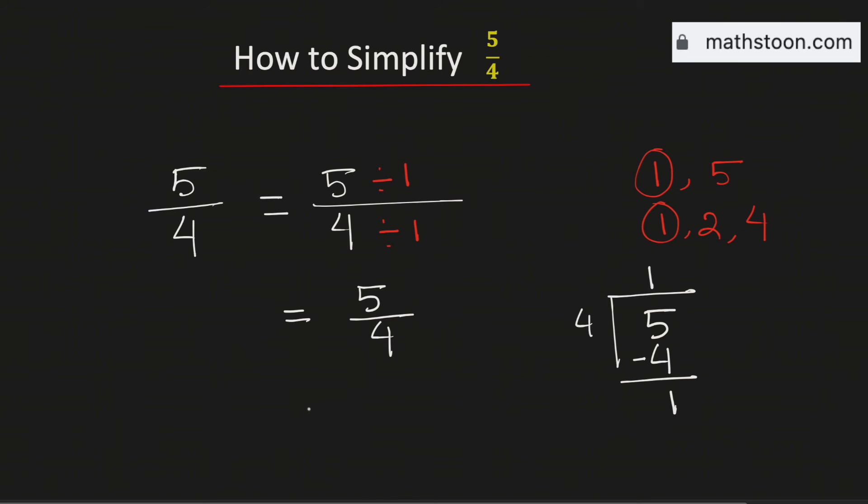Therefore 5 over 4 as a mixed fraction is equal to 1 and 1 fourth and this is our final answer.